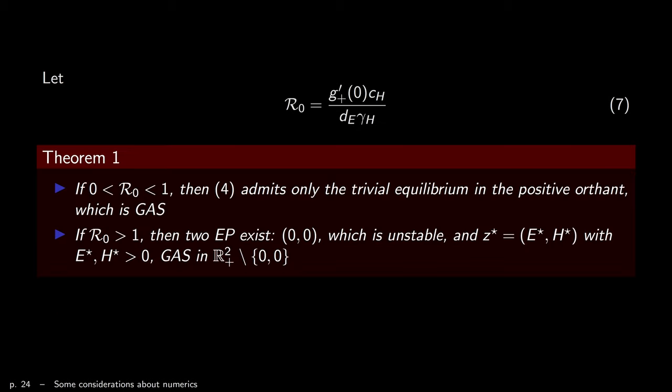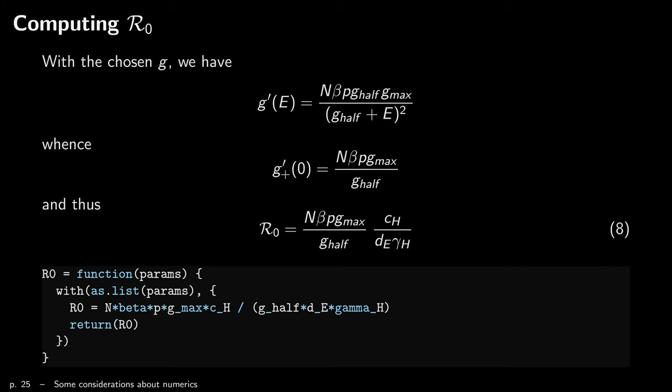Here you have H — the number of infected humans — and the load in the environment. This is a sample solution. If we want to go further, we have this expression for R0, which involves the right derivative at zero of the incidence function. Taking the derivative of G, we find: since E is not by itself there's no problem at zero, so we just stick in zero and get this expression. Therefore R0 takes this value. If I want to compute R0, I can make a function that spits out what value of R0 I have.